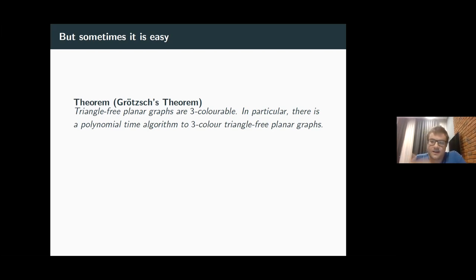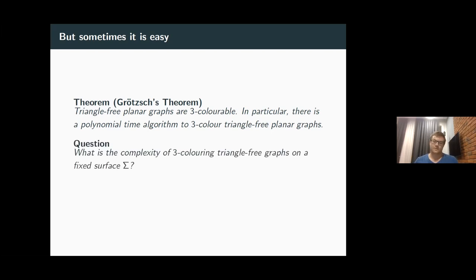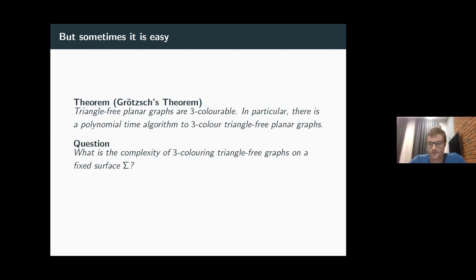In light of Grötzsch's theorem, I'm going to look at a hard generalization from an algorithmic perspective. The natural question is to take the word 'planar' and replace it with something more general — specifically, asking for an algorithm for three-coloring triangle-free graphs on some surface that isn't the plane. We're going to focus on the complexity of three-coloring triangle-free graphs on fixed surfaces.